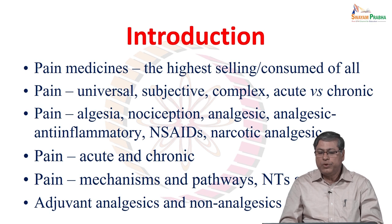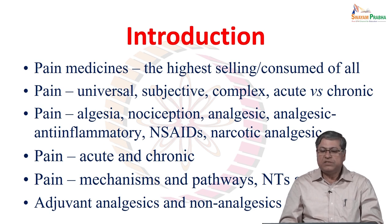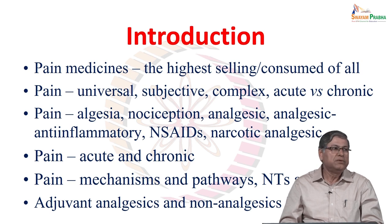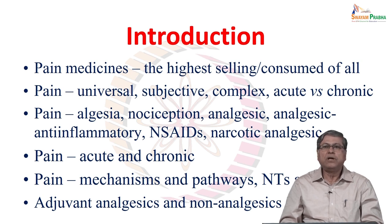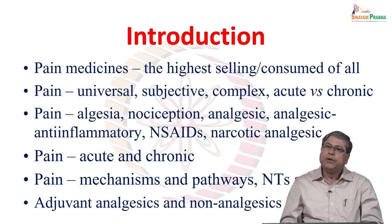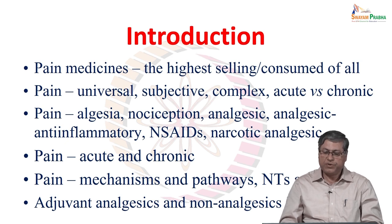On the other hand, there is another group called narcotic analgesics, or opioid analgesics. The term narcosis means sleep or sedation, so these are analgesics that produce analgesia but simultaneously cause sleep or sedation. A better term is opioid analgesics, because all these narcotic analgesics act via stimulating special receptors called opioid receptors.